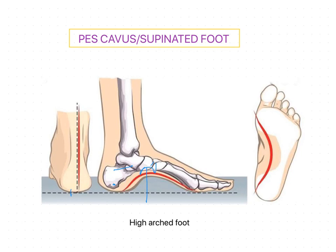The subtalar and transverse tarsal joints are excessively pronated, which prohibits these joints from participating in shock absorption or in adapting to uneven terrains. In extreme supination, these joints become a rigid lever — they are in a locked position. The joints locked in that position are the subtalar joint, talonavicular joint, and transverse tarsal joints.